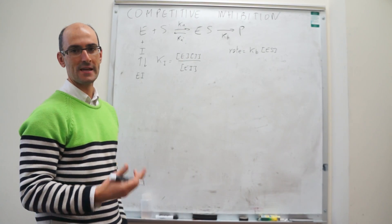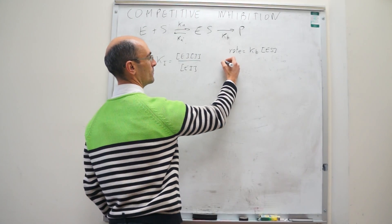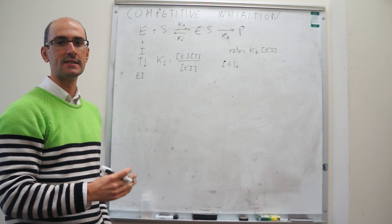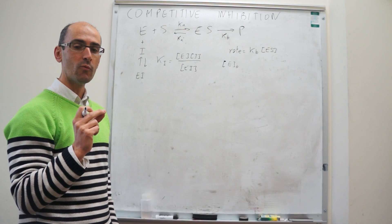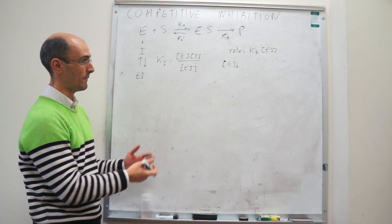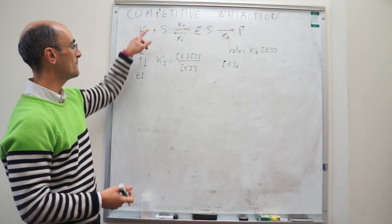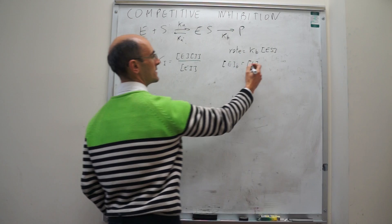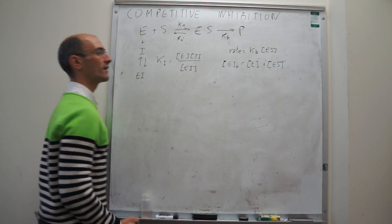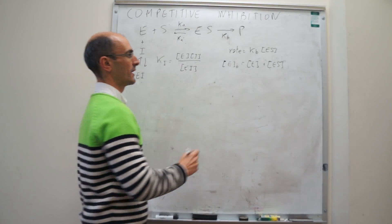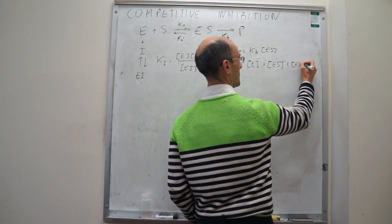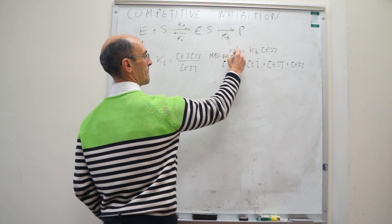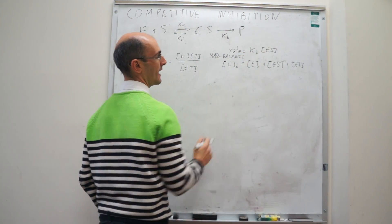At the start of the reaction, before any substrate or inhibitor have bound, the concentration of enzyme is set — that's the concentration of enzyme at time zero, E₀. Once the reaction has started, that enzyme can be distributed: you can have free enzyme [E], enzyme bound to substrate [ES], and enzyme sequestered with inhibitor in the enzyme-inhibitor complex [EI]. This is the mass balance equation of the enzyme, and from this expression we're going to find what [ES] is.